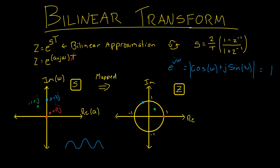Let's pick a point in the right half plane — 1 plus j. As we have plus j from before, we'll have the same angle. However, we're now multiplying by e to the 1, and e to the 1 is approximately 2.7, which means we're going to have a radius of approximately 2.71, and that is outside our unit circle. So if we had a pole in the right half plane, it would map to outside the unit circle in the z-plane, indicating that the filter is unstable.